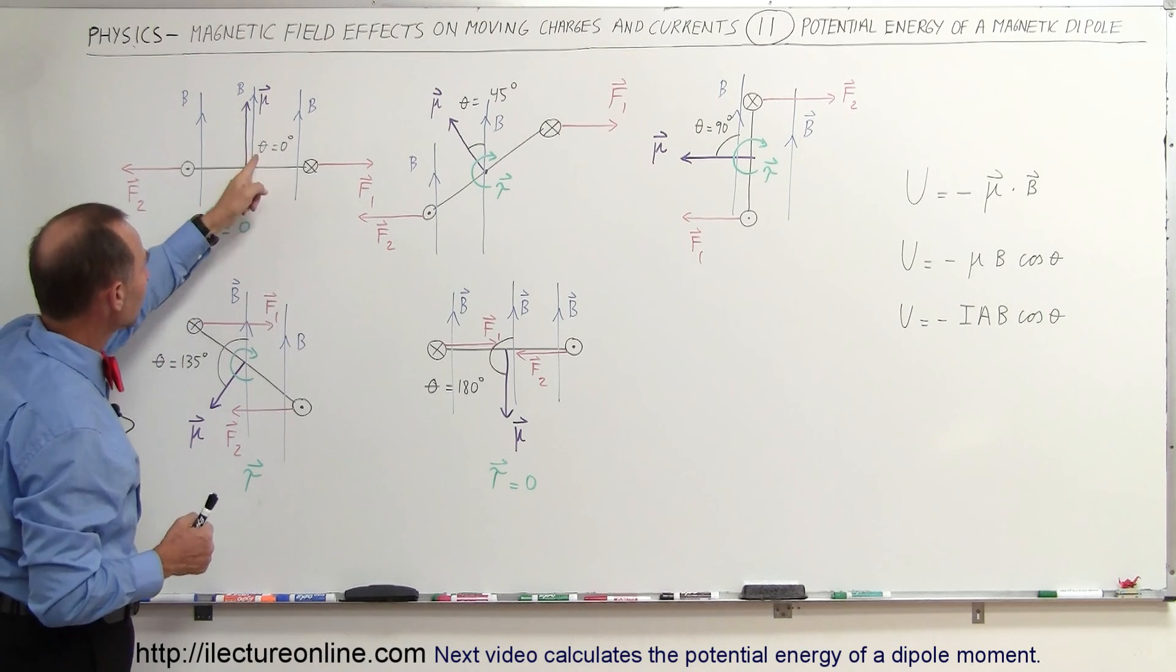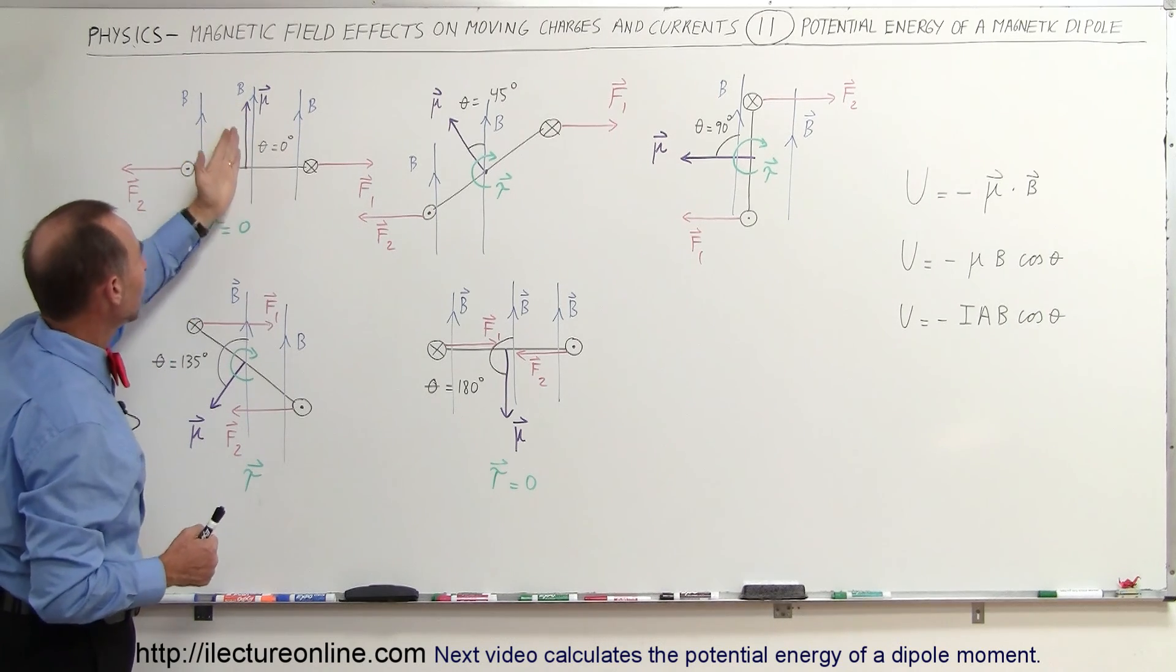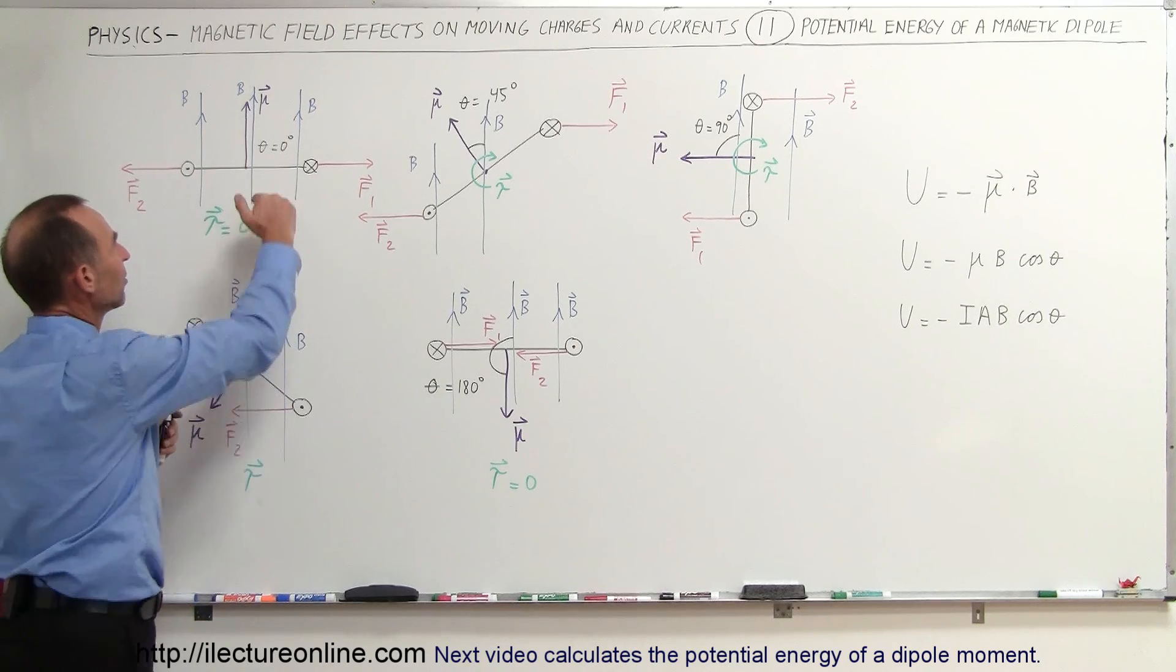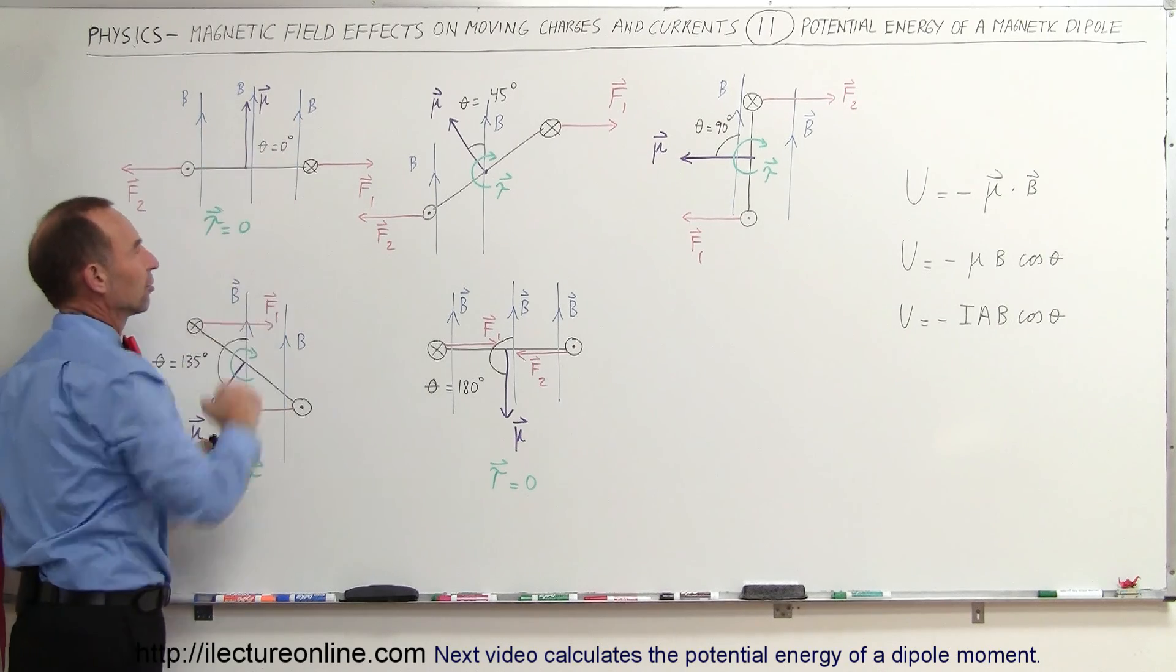Notice the angle between the B field, the magnetic field, and the magnetic dipole moment is zero degrees, that's the same as the angle between the loop and the direction of the plane.